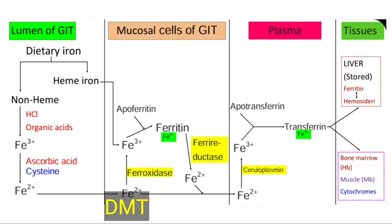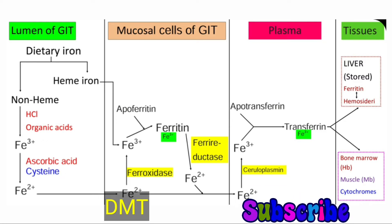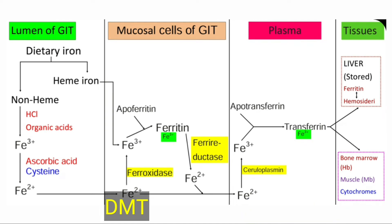DMT is named divalent metal ion transporter because it is not specific for iron. This DMT is also involved in the transport of other divalent cations such as magnesium, zinc, copper, and lead. So all these divalent metal ions can be transported by this particular transporter.